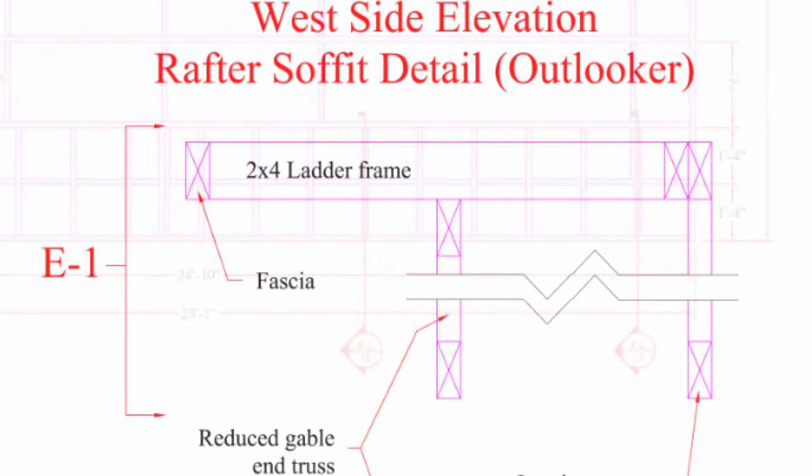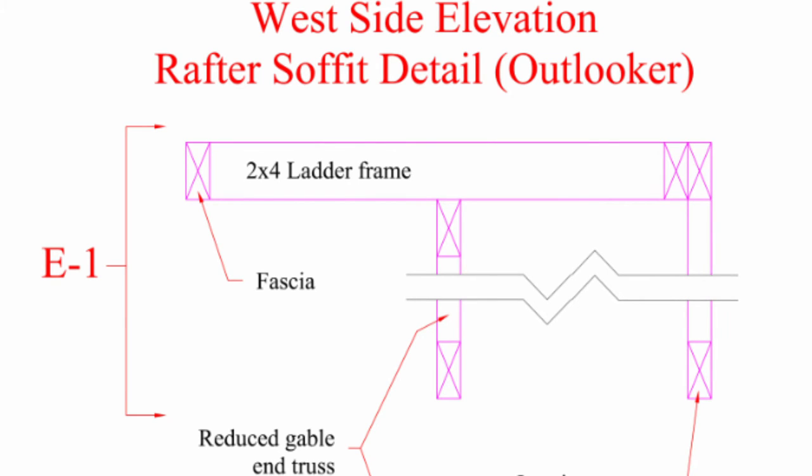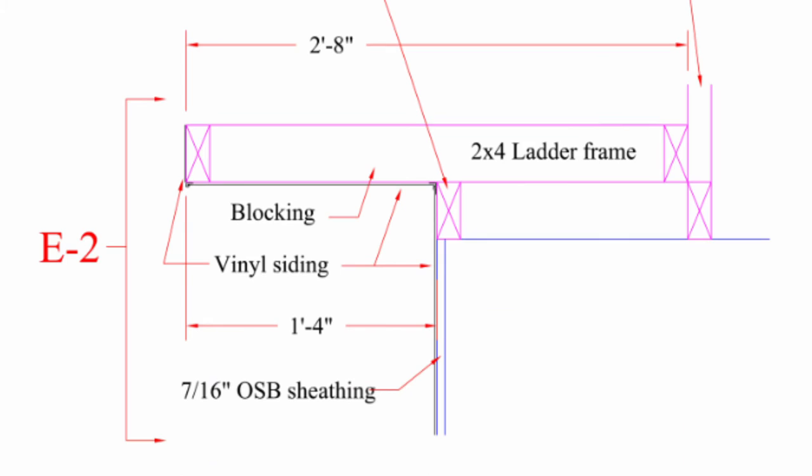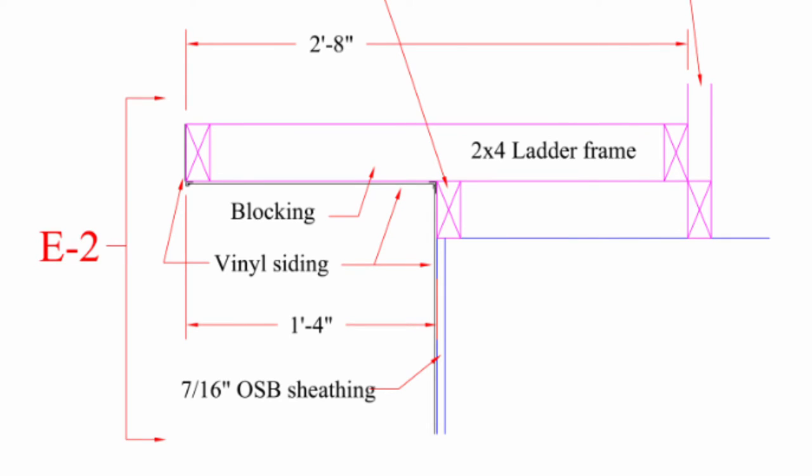So here's E1, you can see the ladder frame. You can see the reduced gabled end and an interior truss and that ladder frame extends beyond that reduced gabled end. On E2, the jagged lines in there denotes the length of the trusses are shortened in the diagram. E2, I'm just showing a different view of the ladder frame as it comes down at an angle and starts to meet with the west side wall. This way I can show where the final siding will be connected to the wall and to the soffit.